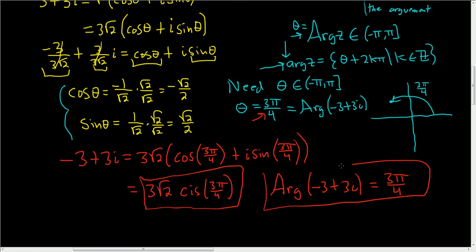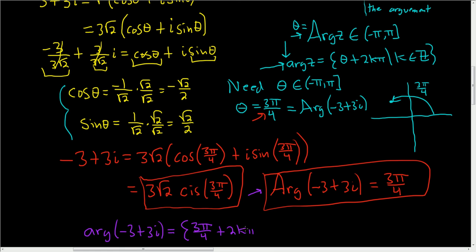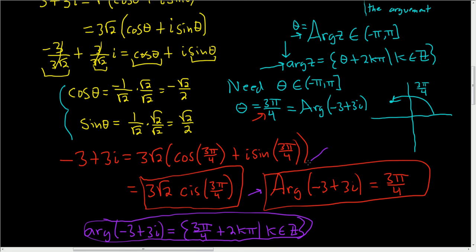If you like, we can write down the full set arg(z). The argument of negative 3 plus 3i is a set with infinitely many values: it's the principal value 3π/4 plus 2kπ where k is an integer. That's the set of all possible arguments; 3π/4 is the principal one — the only value in the interval negative pi to pi. I hope that helps.